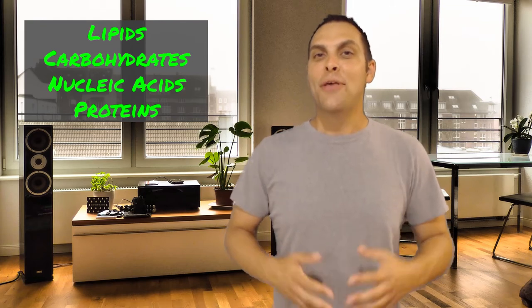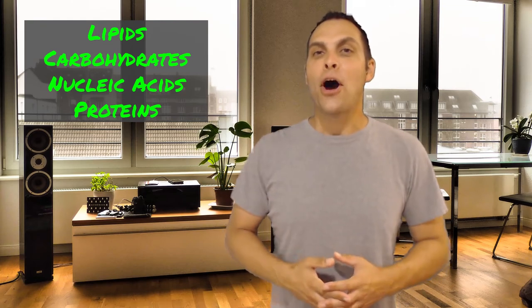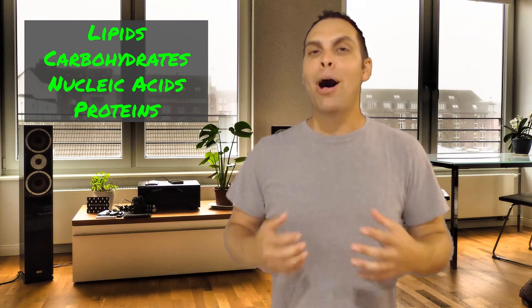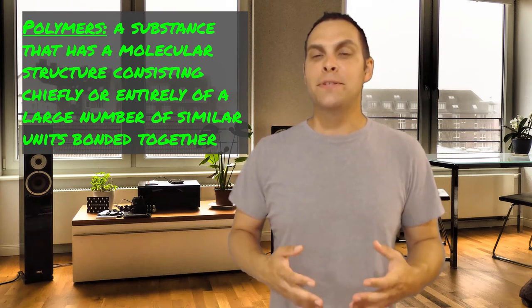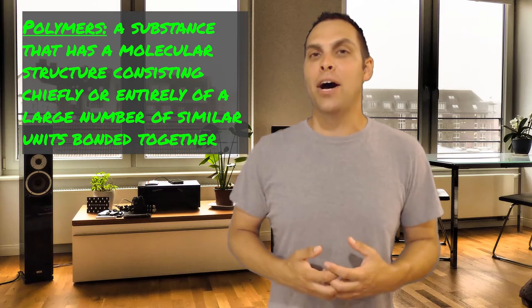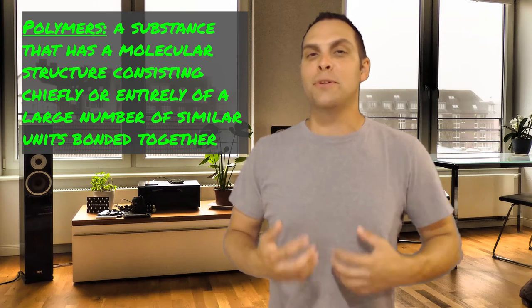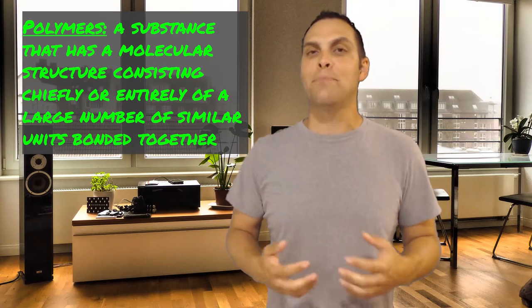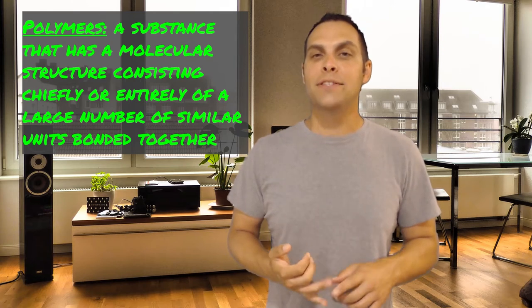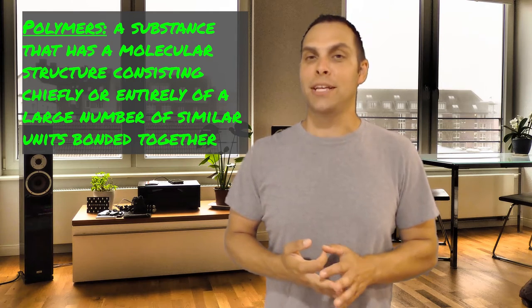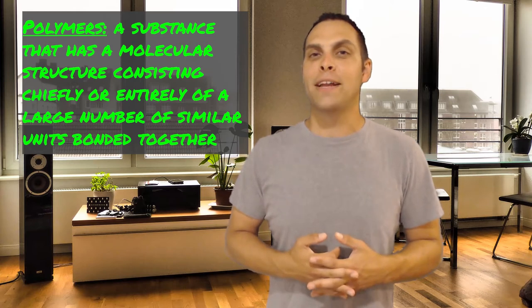And what's interesting is three out of those four classes are what we would refer to as polymers. Polymers are substances that are chiefly made of repeating subunits or similar subunits that we refer to as monomers. And of the four major classes, carbohydrates, nucleic acids, and proteins are all classified as polymers.